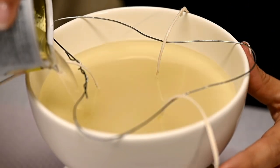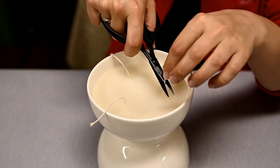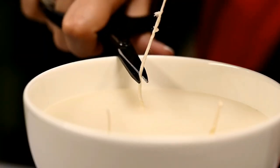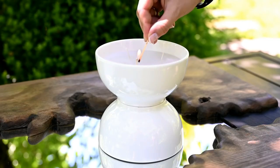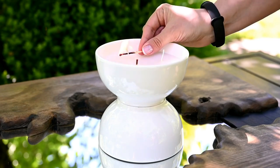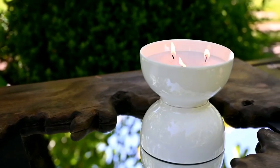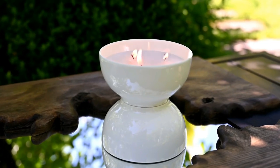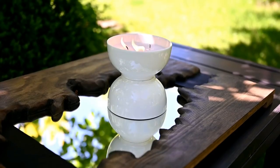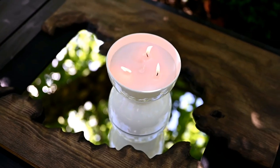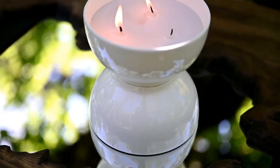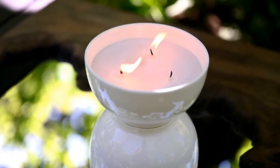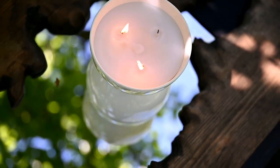After the wax has hardened I'm cutting the wicks to the desired height and we are done. I've seen this simple project on the Lone Fox channel and I really liked the idea. This vessel has an interesting modern shape, you can paint it and also use as a small planter. It's a budget-friendly option to get a large interior candle as well.